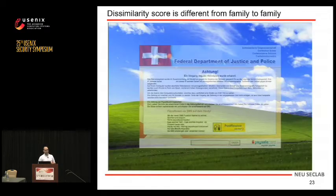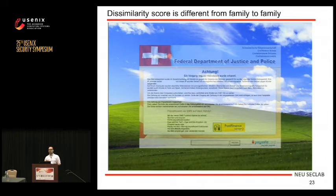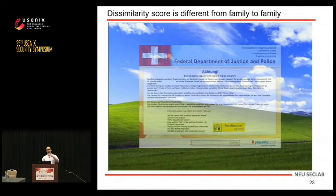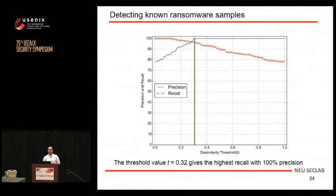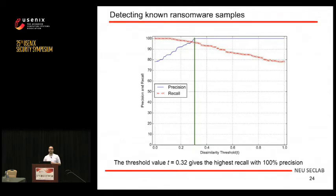This is one of the false negative cases we had. We see a structural change in the image, but because the similarity score is not significant due to it being transparent, we were not able to detect it. To address these cases and achieve higher coverage, we performed a test by varying the similarity threshold and found that at 0.32, we have the highest recall with 100% precision on the labeled dataset — meaning that if we detected a sample as ransomware, it was 100% ransomware.